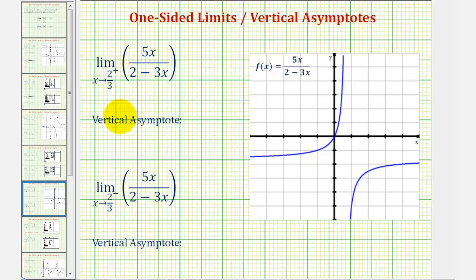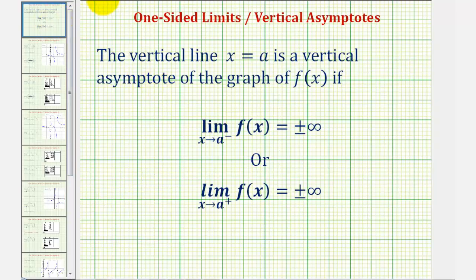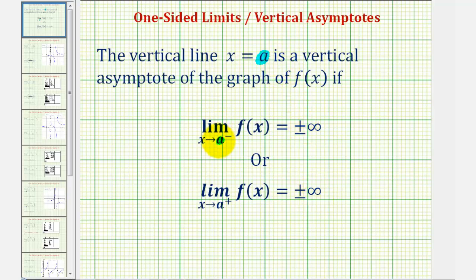We're going to determine two one-sided limits. Before we do this, I want to make the connection between one-sided limits and vertical asymptotes. The vertical line x equals a is a vertical asymptote of the graph of f(x) if the limit as x approaches a from the left equals plus or minus infinity, or if the limit as x approaches a from the right equals plus or minus infinity. So if either of these limits equals plus or minus infinity, then x equals a will be a vertical asymptote.